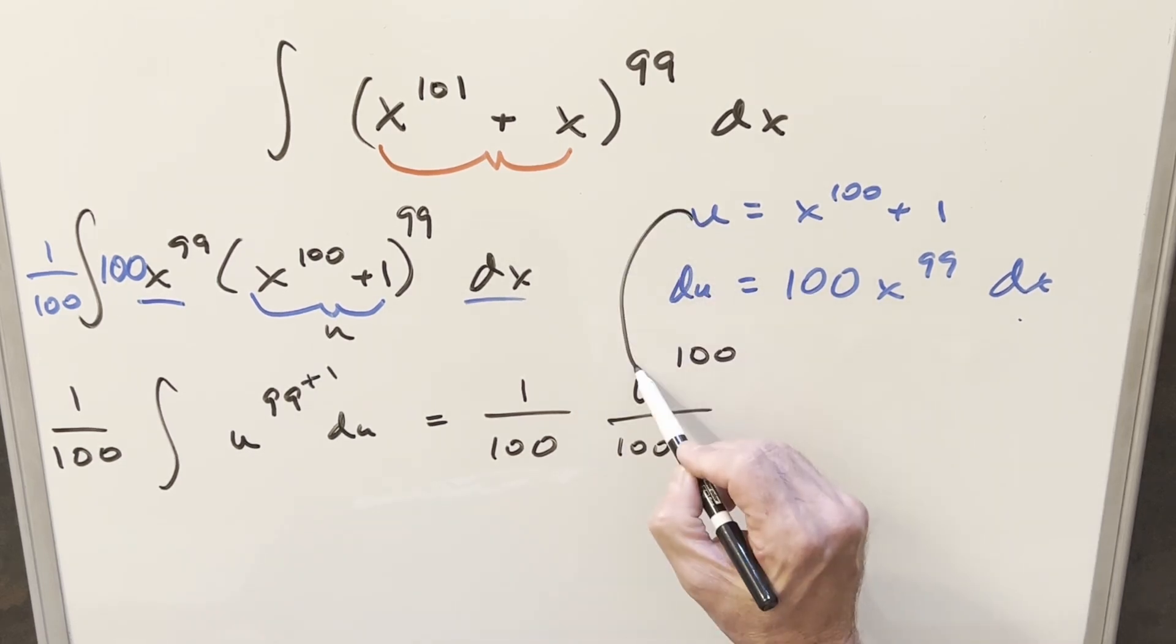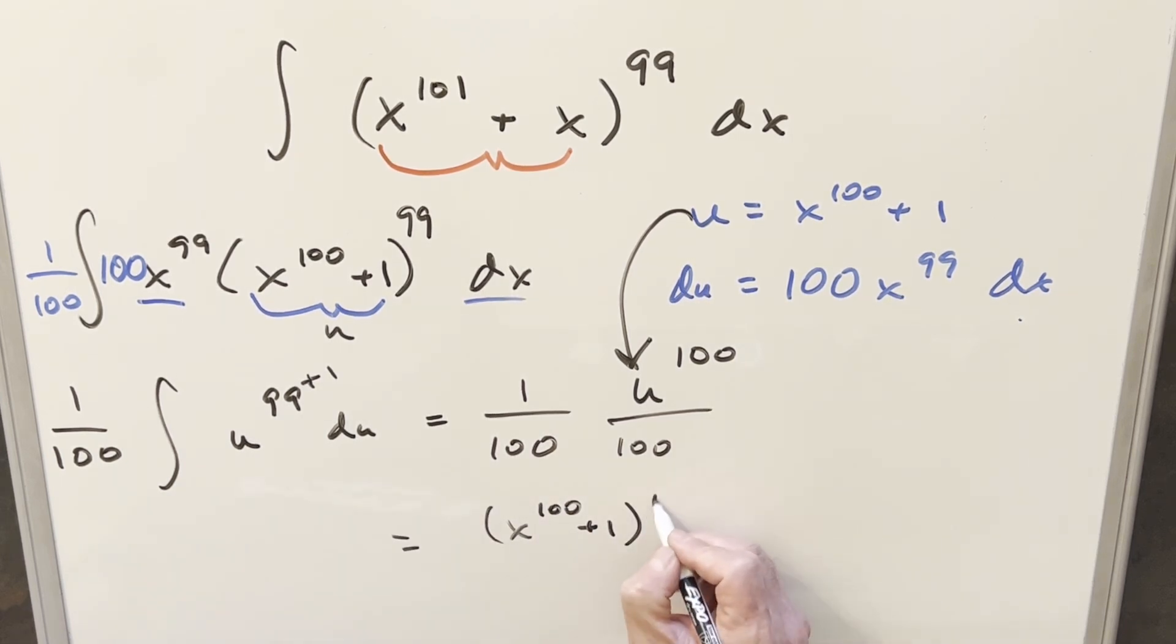And then we just need to back substitute in order to finish it off. So plugging in we're going to have x to the 100 plus 1 to the 100. 100 times 100. I'll write this as 100 squared in the denominator. Add a plus c and that's it.